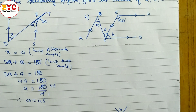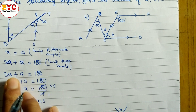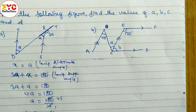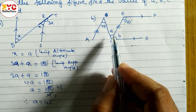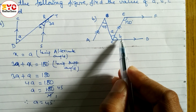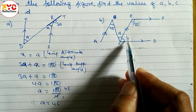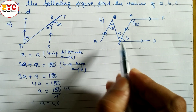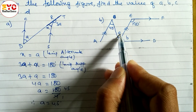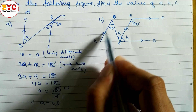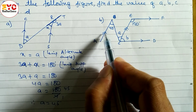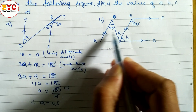Hope you understand this one. Now look at this — here we have to find out the value of a, and also the value of b. a is equal to 40. We can write down — these two are alternate. You can see here this is in the form of Z and these two lines are parallel.